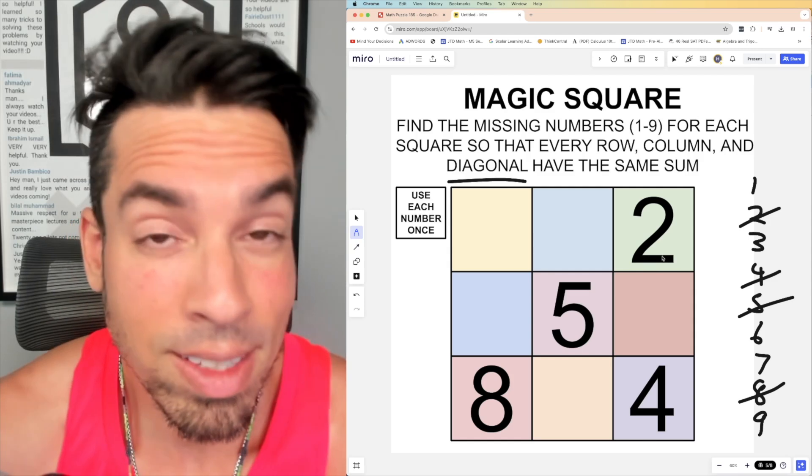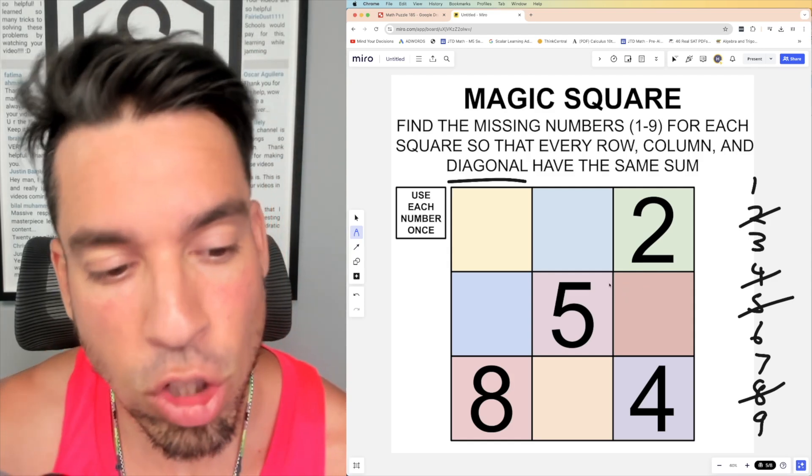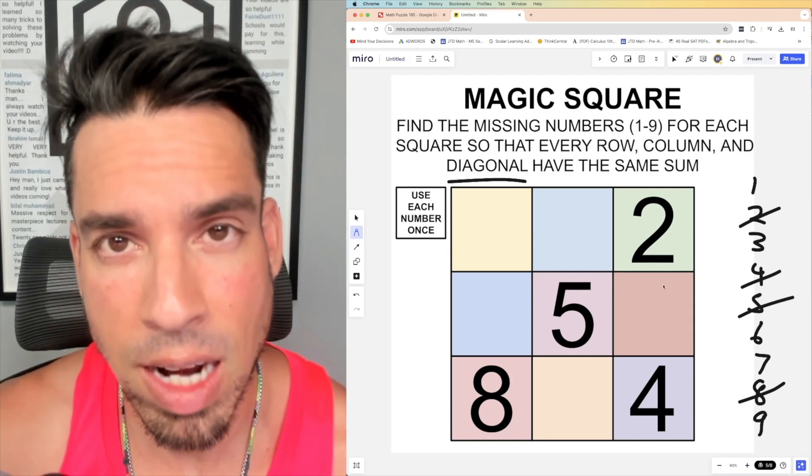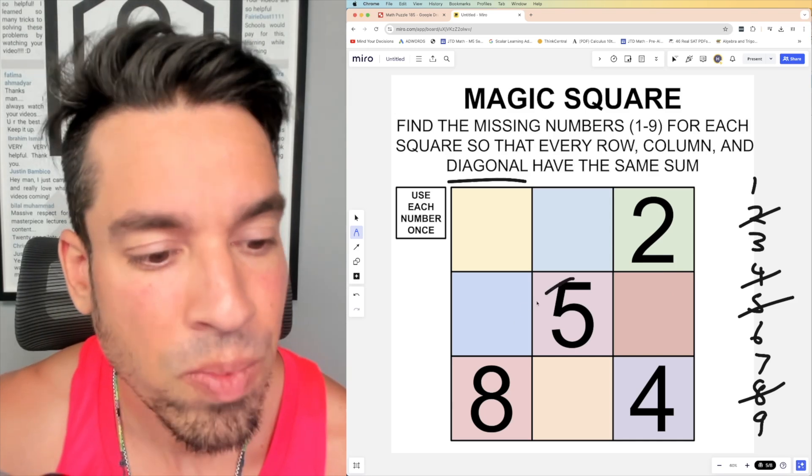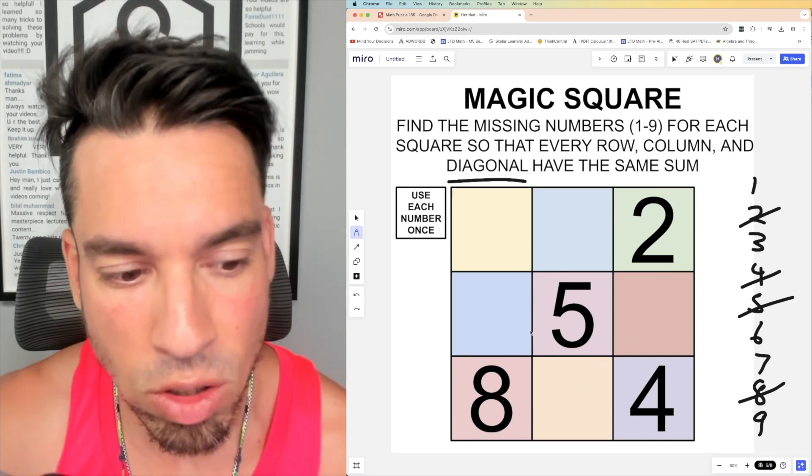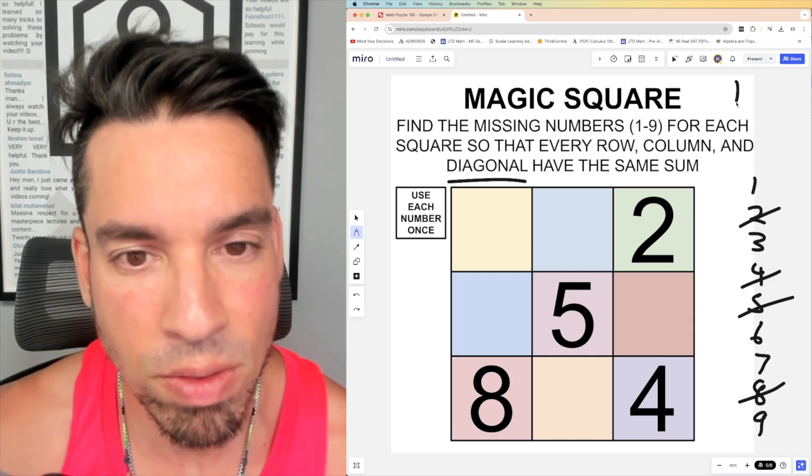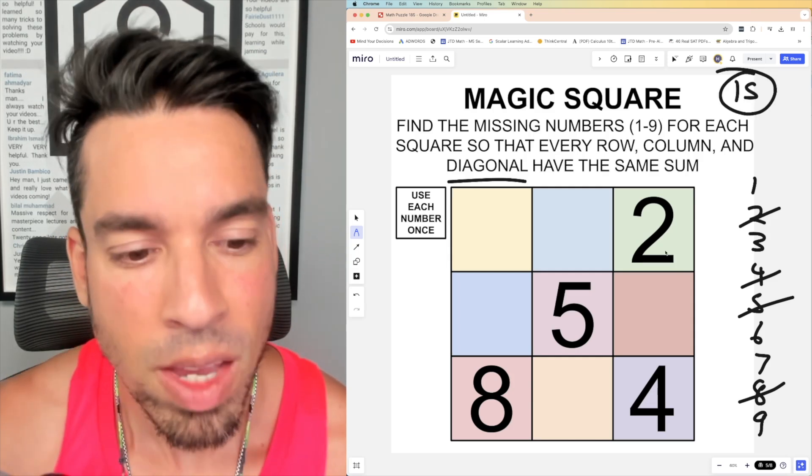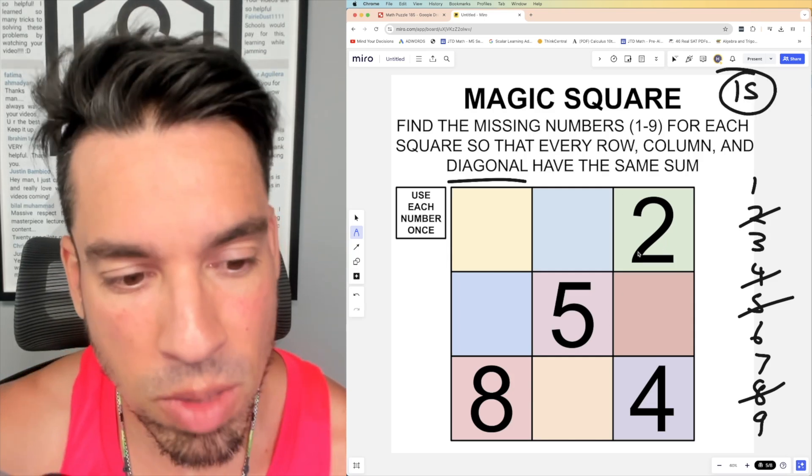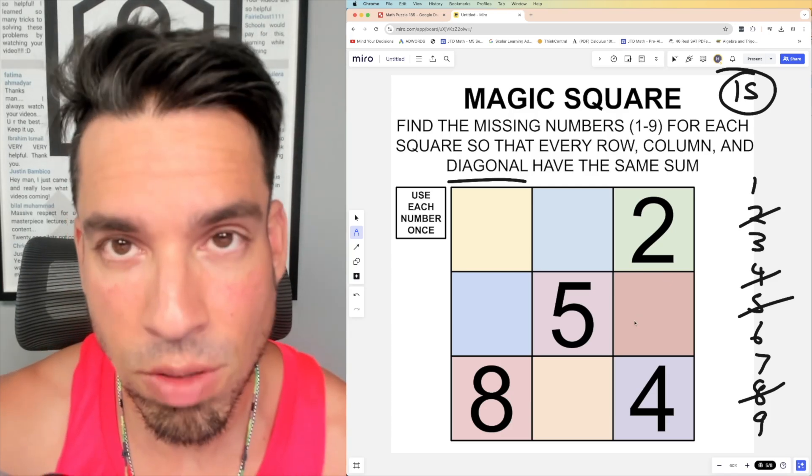Now the next question we got to answer is what is this magical sum? Usually when we don't have a filled-in row, column, or diagonal we have to deduce that, but the nice thing here is we have this beautiful diagonal. This diagonal adds up to eight plus five is 13 plus two is 15, which means if everything is going to have that same sum, the sum must always be 15.